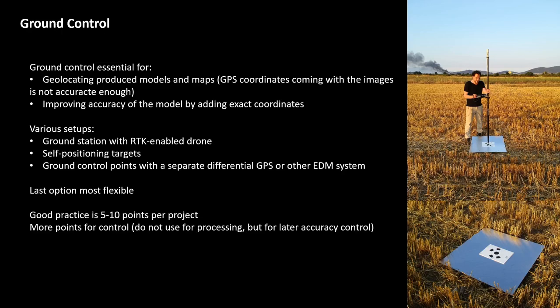Another option is self-positioning targets. As seen in the image, these targets — aluminum plates — are specifically useful for thermal recording, with a visible-light target mounted on top. Some of these targets have GPS systems built into them, so you just distribute them in the drone operation area and they record their own position to a very high degree of accuracy. The most common option, however, is to use ground control points with a separate differential GPS or another measurement device such as a total station. This is very flexible because your positioning system is not bound to a single drone or specific set of targets.